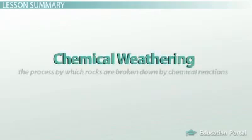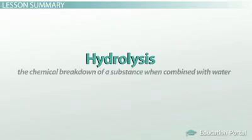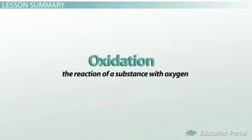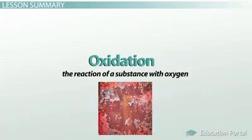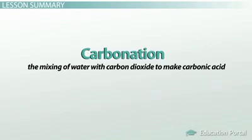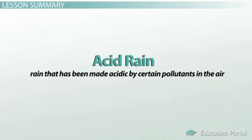Let's review. Chemical weathering is the process by which rocks are broken down by chemical reactions. Hydrolysis is the chemical breakdown of a substance when combined with water — the most common example is feldspar in granite rocks changing to clay. Oxidation is the reaction of a substance with oxygen, the process that causes rust; when iron in rocks reacts with oxygen, it forms iron oxide, which weakens the rock. Carbonation is the mixing of water with carbon dioxide to make carbonic acid, important in the formation of caves. Lichens are a combination of fungi and algae that grow on rocks and produce acids that break down the minerals within the rocks. Acid rain, defined by the EPA as rain made acidic by certain pollutants in the air, falls to the earth and chemically weathers rocks.